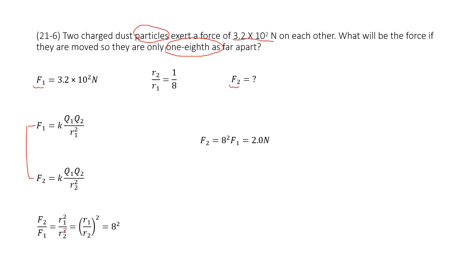r1 squared over r2 squared. So you use this term, just divide by this term. And it comes to this one, this term, because k q1 q2 is cancelled. So now we get r1 squared over r2 squared.